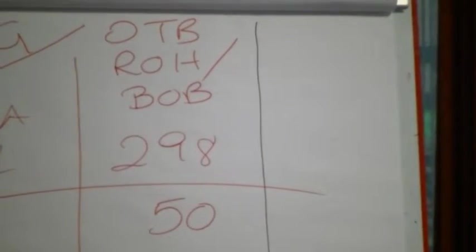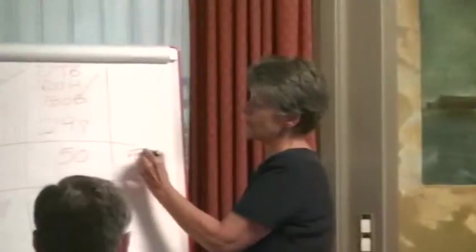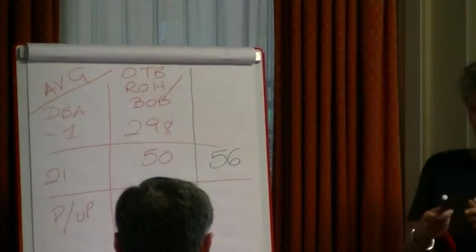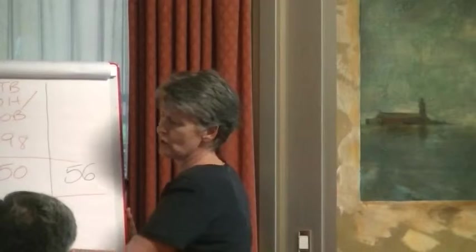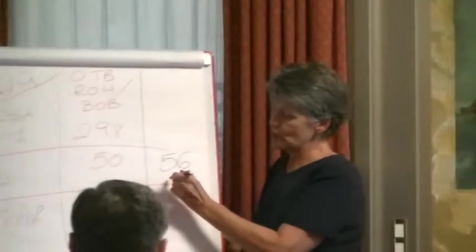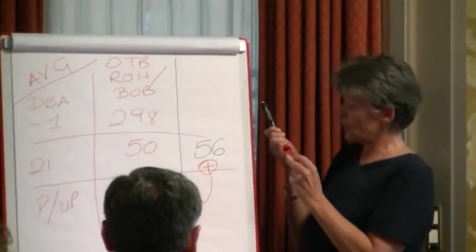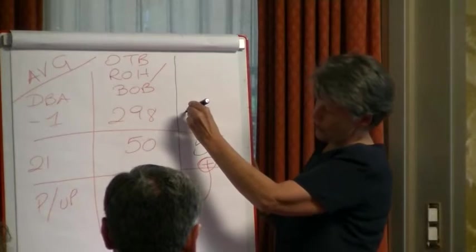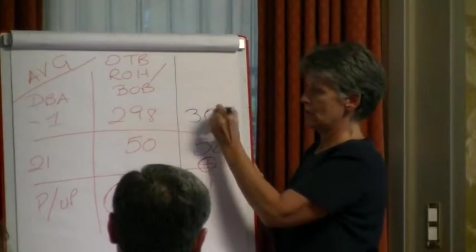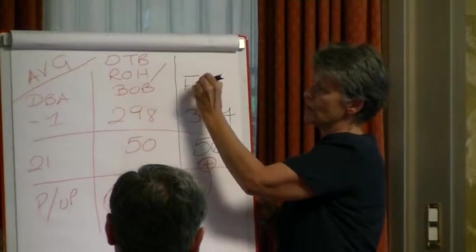We go and look in our system and we see we have 56 reservations on hand — it's 21 days still to go. So all we've got to do is say: we know on average, on this type of day, we pick up 248 bookings. So we're simply going to add that average pickup to our actual reservations on the books in order to calculate our forecast. In this case, the forecast is going to be 304 — we expect that at minus one we're going to have 304.